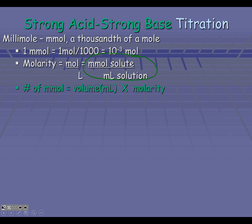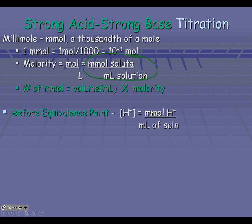The number of millimoles is equal to the volume in milliliters times the molarity. When talking about titrations, there are a couple of important places where we want to note the pH. Before the equivalence point, our pH will be based on our hydrogen ions. Once we have the millimoles of hydrogen that are left divided by the total volume of solution in milliliters, we will get the concentration and can calculate the pH.